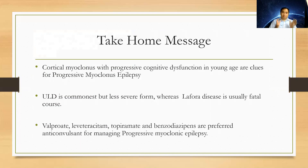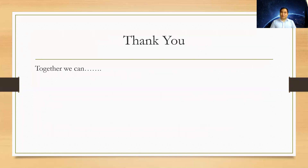The take-home message: if someone has cortical myoclonus with progressive cognitive dysfunction in young age, those are the clues for progressive myoclonic epilepsy. Unverricht-Lundborg disease is the commonest but usually benign, whereas Lafora body disease is usually fatal. Valproate, levetiracetam, topiramate, and benzodiazepines are preferred anticonvulsants, whereas carbamazepine, oxcarbazepine, phenytoin, brivaracetam, and gabapentin are usually contraindicated. Thank you very much for your attention.